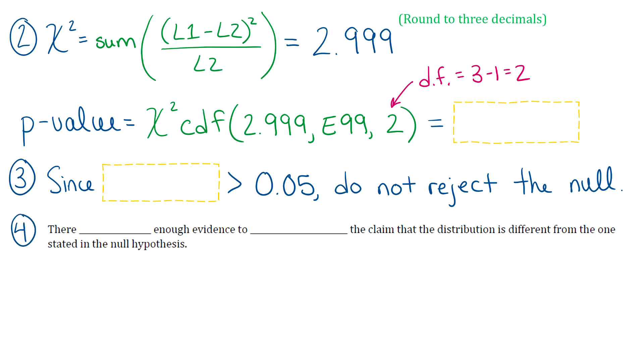And then for step four, we'll state that there is not enough evidence to support the claim that the distribution is different from the one stated in the null hypothesis.